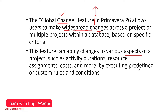Global Change executes predefined or custom rules and conditions. The main project attributes it affects are activity attributes — duration, resource assignment, and activity cost. These are the major data types that Global Change can modify.